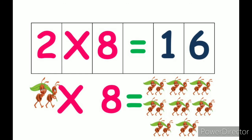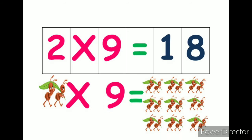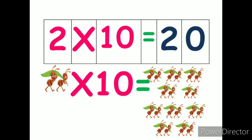2 eights are 16. Now ants are there 16 in 8 groups. So 2 eights are 16. 2 nines are 18. There are 18 ants now in group 9. So 2 nines are 18. 2 tens are 20.